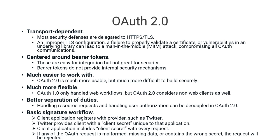OAuth 2.0 is much more flexible. OAuth 1.0 only handles web flows, but OAuth 2.0 considers non-web clients as well, making it very flexible and not tied to any single flow. There is also better separation of duties — handling resource requests and handling user authorization can be decoupled in OAuth 2.0. Many large banking applications use access management products that provide access tokens and refresh tokens.